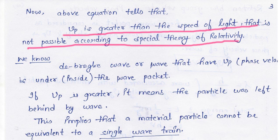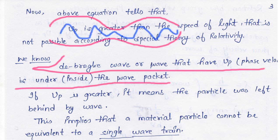If we look at the formula, Vp equals c squared by V. This means the velocity will be greater than c, which is not possible. We know that the De Broglie wave, or wave that has Vp, the phase velocity, is under or inside that wave packet.